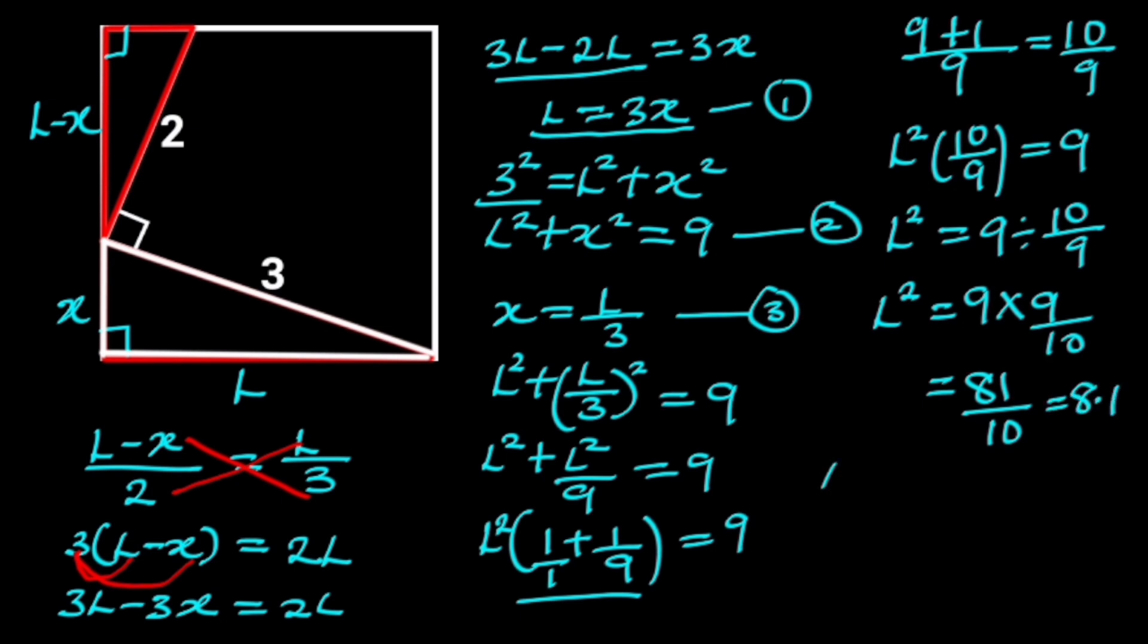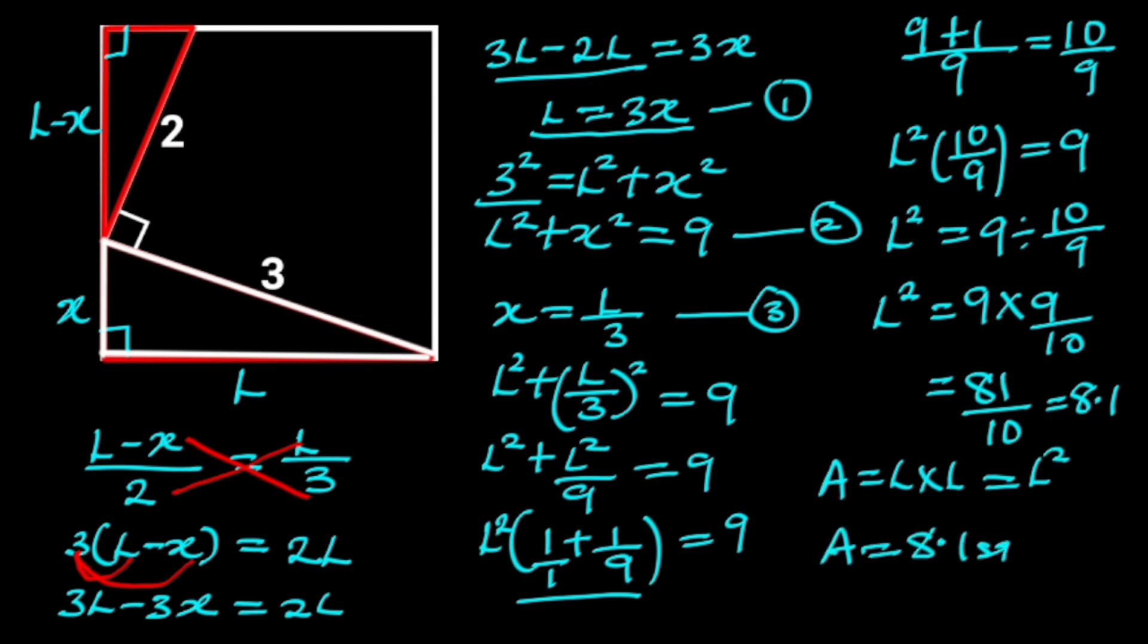Hence, we can say that the area of the square which is L times L is equal to L squared, which is equal to 8.1 square units. Thanks for watching. If you like this video, make sure to subscribe for more.